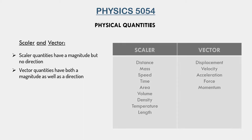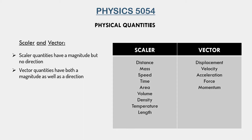Here are some more examples of scalars and vectors. We have distance, mass, speed, time, area, volume, density, temperature, and length as scalar quantities. All of these have a magnitude but they do not have a direction. We do not specify the direction when we measure the mass, for example.